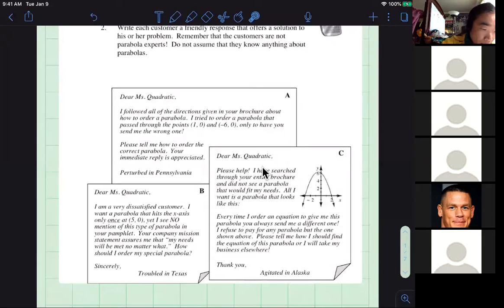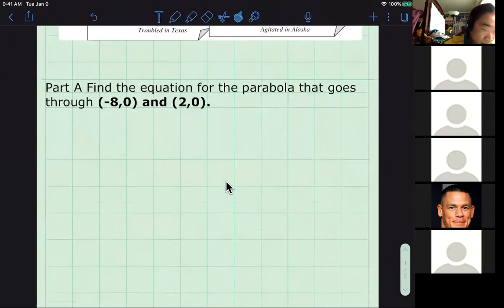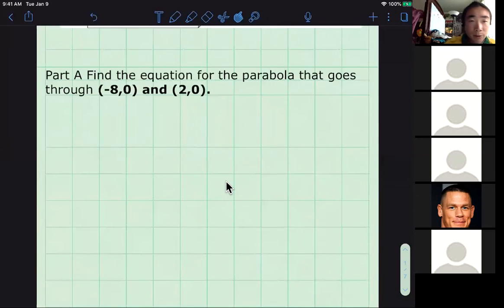The numbers have been changed a little bit because I went through these exact problems in session one. For those that want to see more practice, I changed the numbers so you can see more examples. In part A, you should see a little red dot over here. When given these two specific points, we're trying to find the equation of a parabola going through (-8,0) and (2,0).